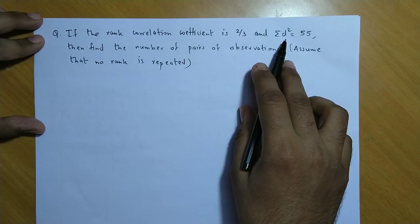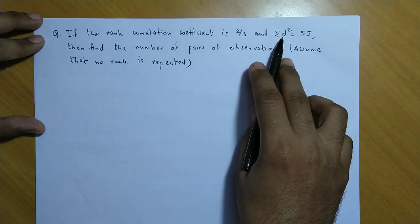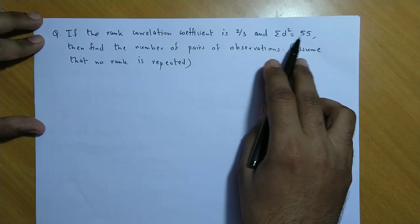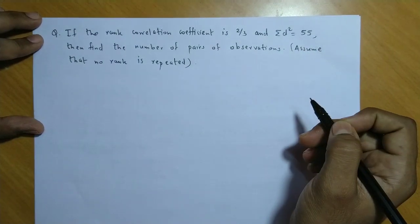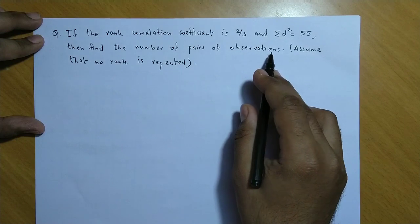And ranks ka jo difference ka square hai, uska sum, yani summation d square, is ki value hai 55. Hame find karna hai n ki value, n yani ki number of pairs of observations.